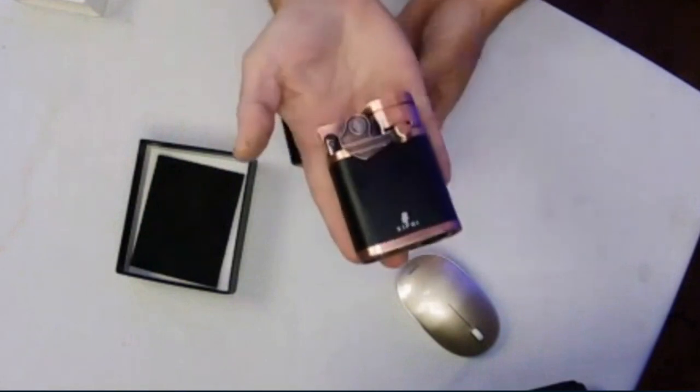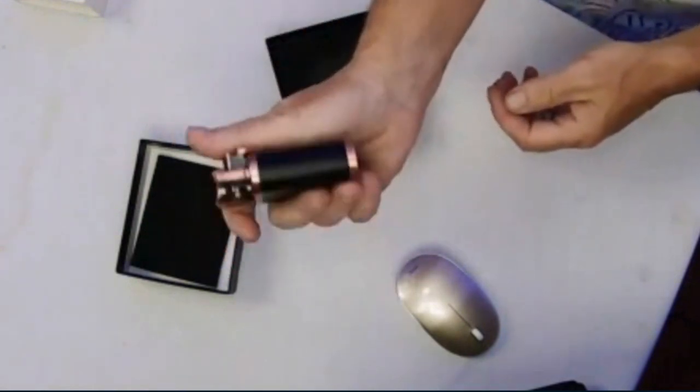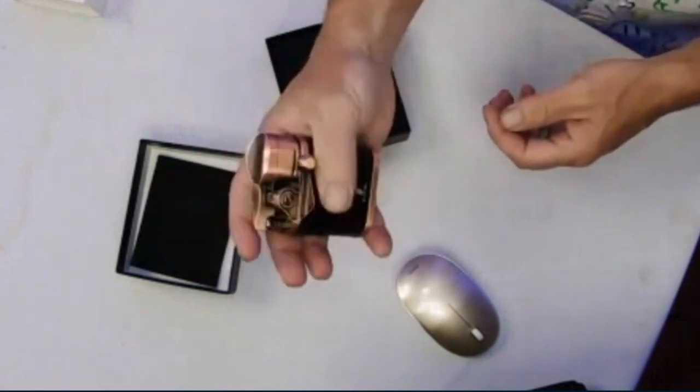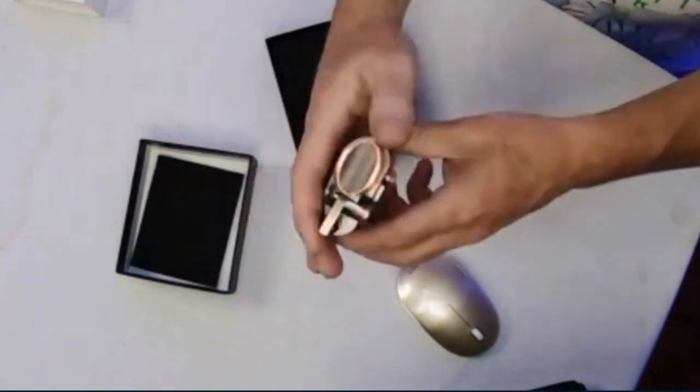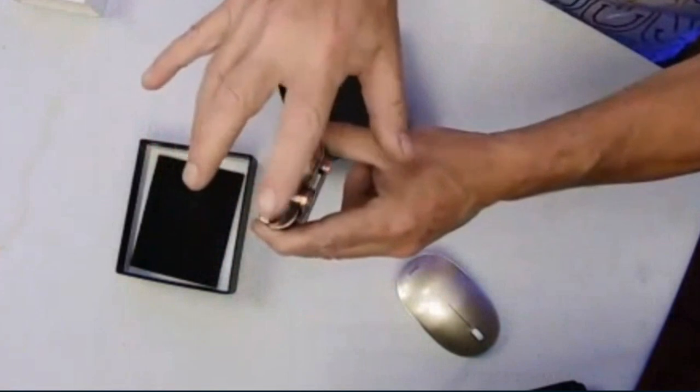Look at this lighter. This lighter fits in your hand. Pretty ergonomic. It's not tiny, it's not too big. I have a small hand. It's got a cigar holder up here, so you can put your cigar on there. I don't have a cigar.